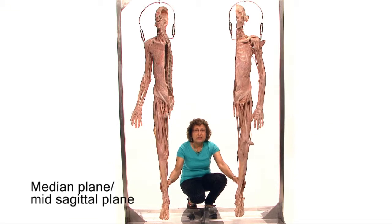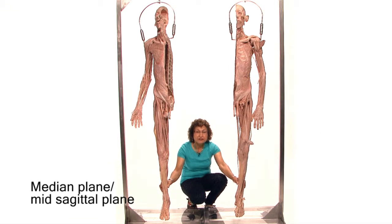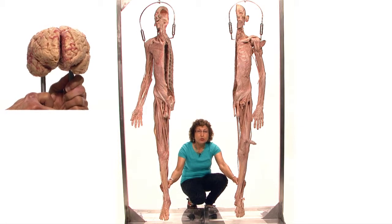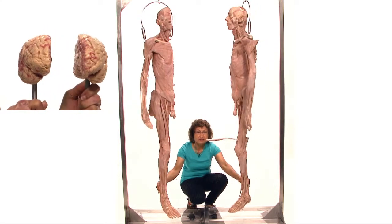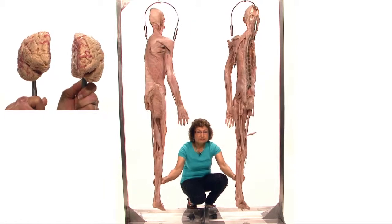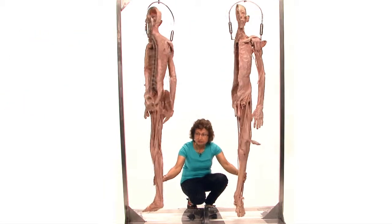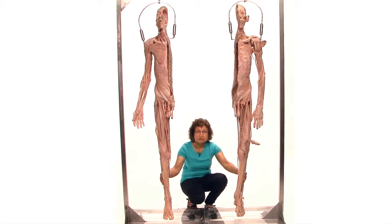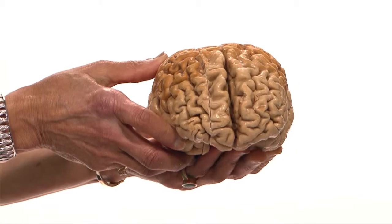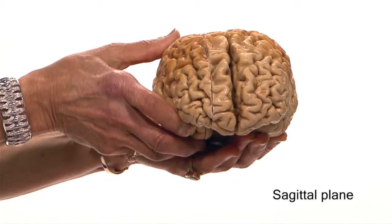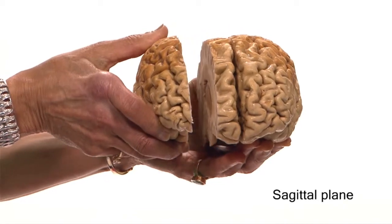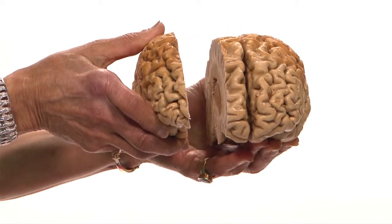The median plane, also called the mid-sagittal plane, divides the body into two equal halves — right and left. The sagittal plane divides the body into two unequal halves and is parallel to the median plane.